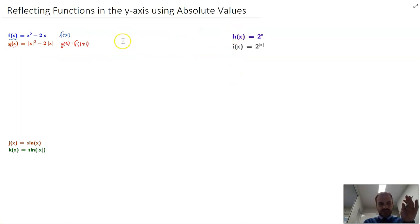If you look at the three functions on our screen, or the six functions, you can see the same thing is happening here, and the same thing is happening here. x is just being replaced with the absolute value of x. And we're going to get this reflection in the y-axis, sort of. And again, let's take a look what that means.